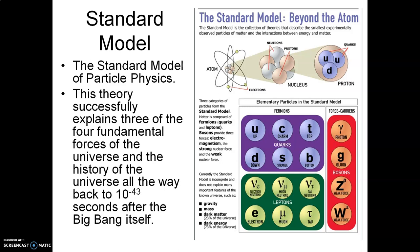Physics today here in the early 21st century is basically two things. Number one, there is what is called general relativity, which is our current understanding of gravity. General relativity perfectly describes the universe at the largest of scales — it describes, for example, what happens when planets orbit the sun, how galaxies rotate, and even the expansion of the universe itself.